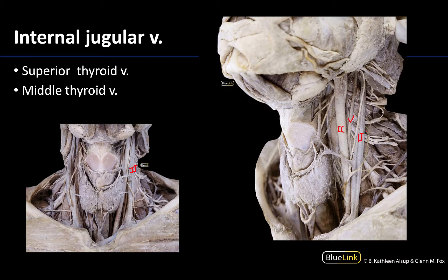Two of these tributaries are thyroid veins. The superior thyroid vein, which you can see pretty well here, travels close to the superior thyroid artery and drains directly into the internal jugular vein. The middle thyroid vein is quite small — it is often cut during dissection — but you can see a bit of it here draining directly into the internal jugular vein.